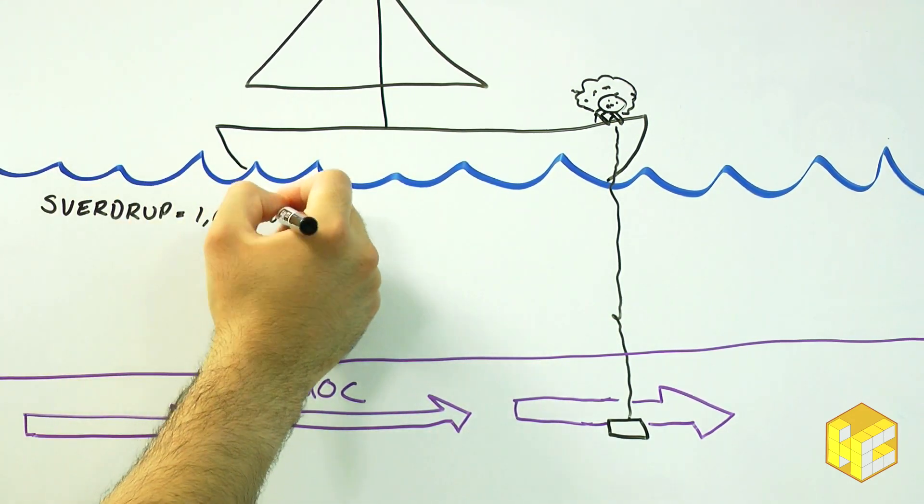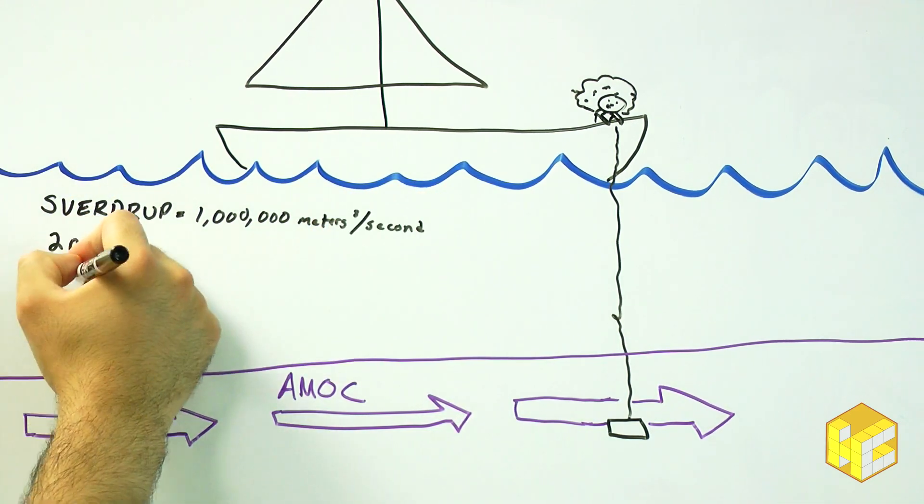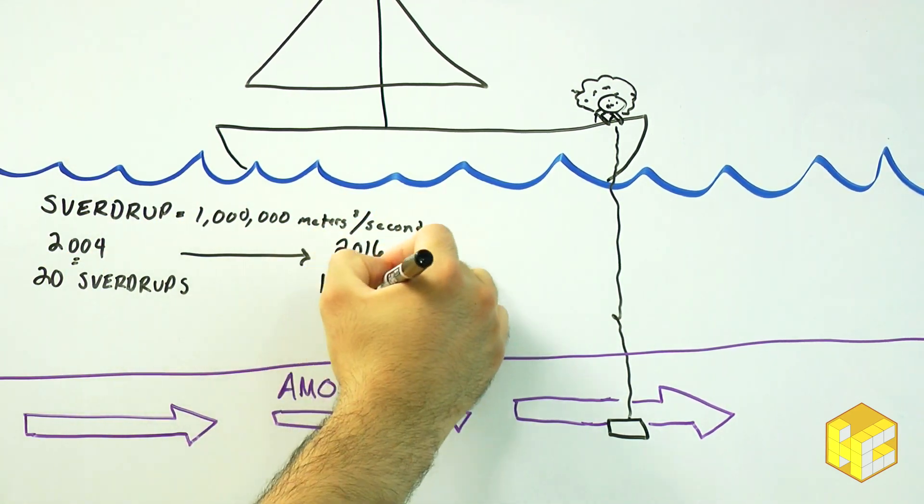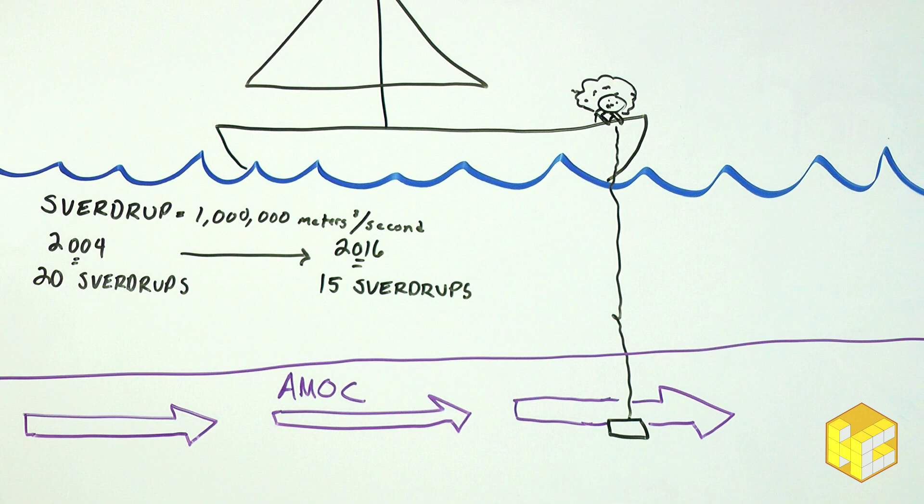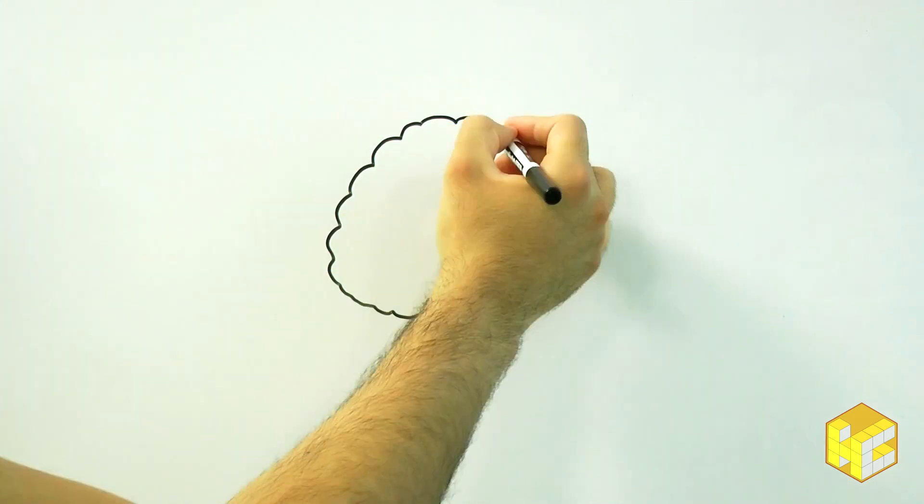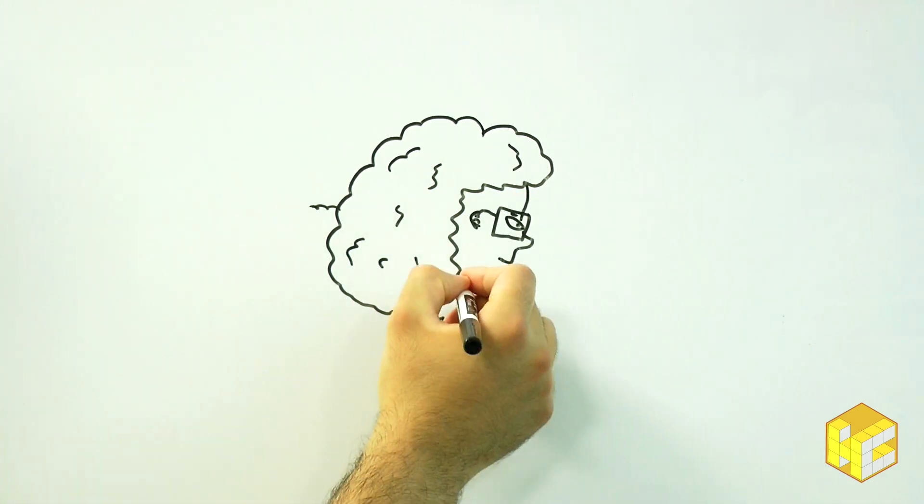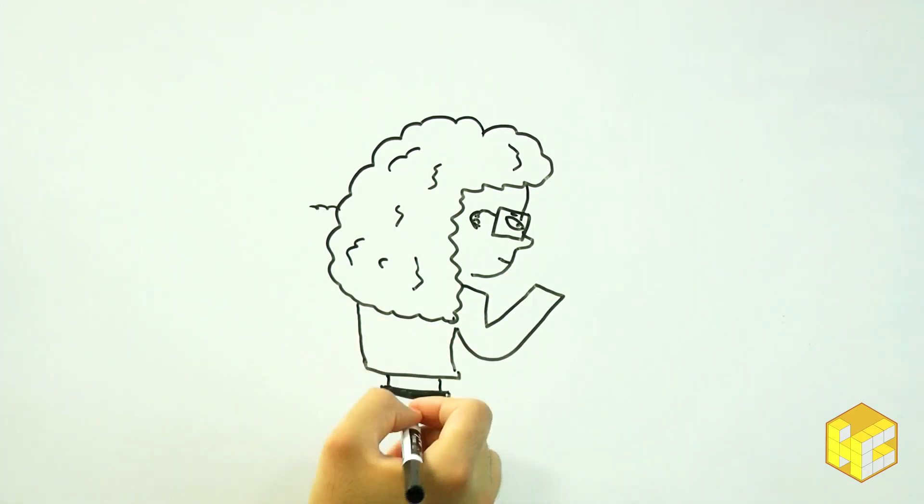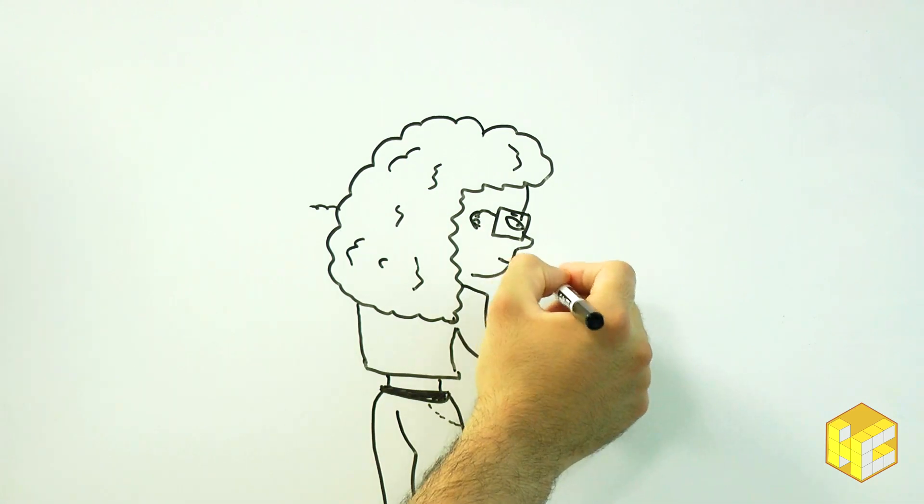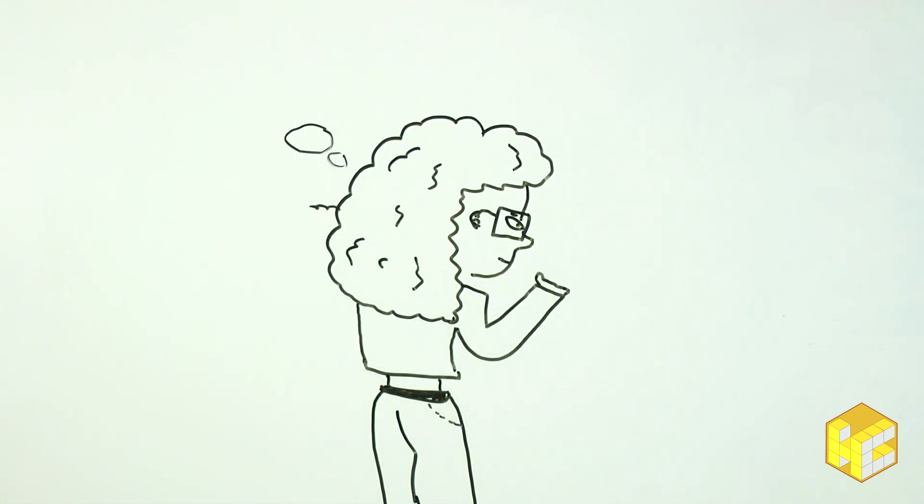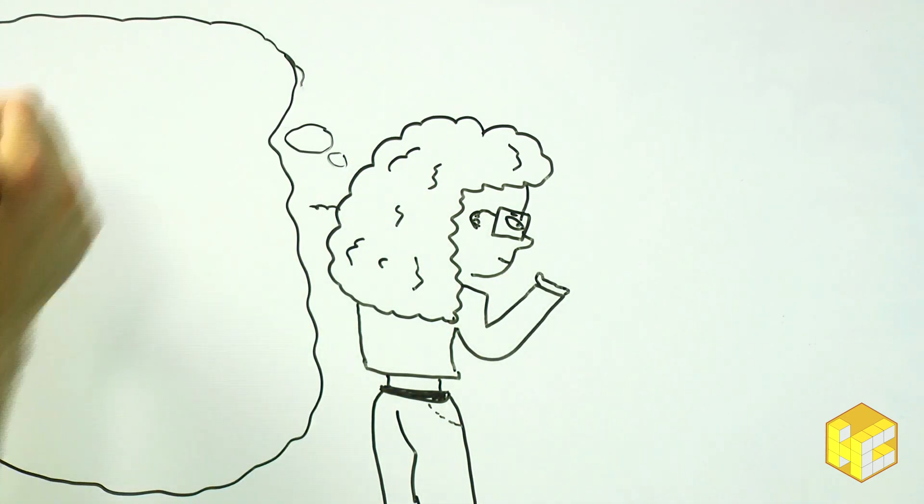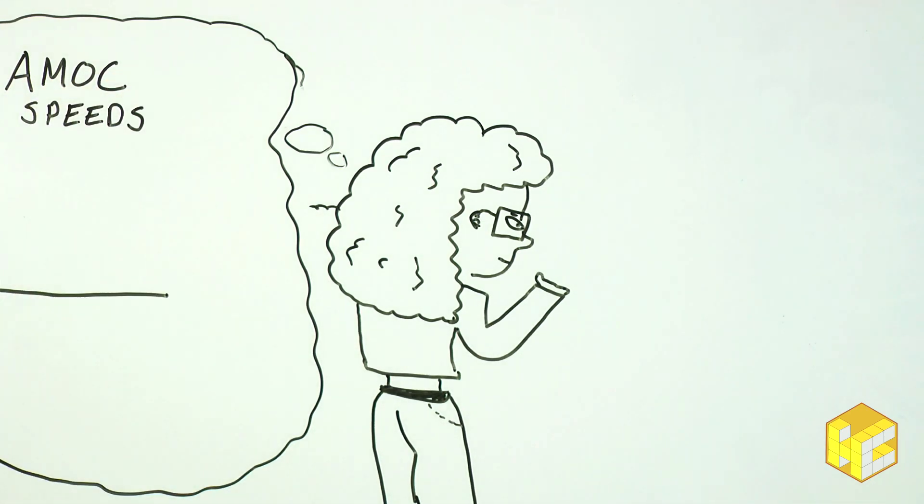Since 2004, when humans first started measuring its speed, the AMOC has slowed from 20 sverdrups to just 15. There are no accurate measurements of the current speed before this time, but research based off of ocean surface temperatures suggests that the slowdown started in 1930 and has slowed down faster since 1975 than any other period in the past thousand years.